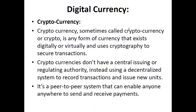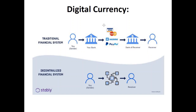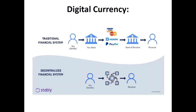Cryptocurrency uses a decentralized system to record transactions and issue new units. It is a peer-to-peer system that connects one person directly with another, enabling anyone anywhere to send and receive payments. In a traditional centralized banking system, money goes through your bank, then a payment processor such as Mastercard, Visa, or PayPal, involving one or more central banks. In a decentralized system like cryptocurrency, you send money to a network and after validation the receiver gets it directly into their wallet.